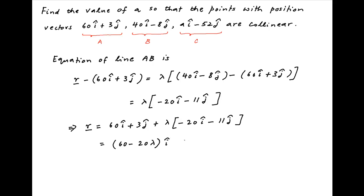which is equal to 60 minus 20 lambda times i plus 3 minus 11 lambda times j. Let's call this equation 1.